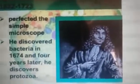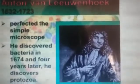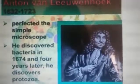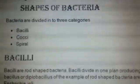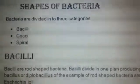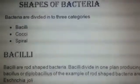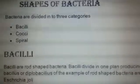Now, who discovered bacteria? Antonie van Leeuwenhoek was the person to discover bacteria. In 1674 he discovered bacteria in rainwater, and after that he also discovered protozoa. Bacteria are divided into three shapes: bacilli, cocci, and spirilla.